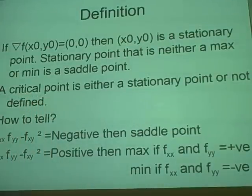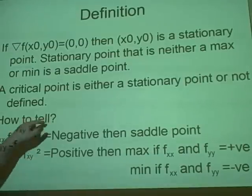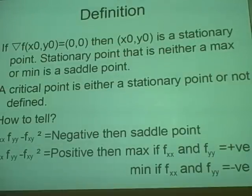Right, a critical point is either a stationary point or it's not defined, and how to tell, now this is how to tell what it is. So once we have our position and our function and our value, then the derivative with respect to x done twice times the derivative, the partial derivative sorry, with respect to y done twice.